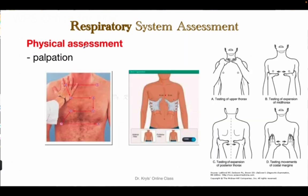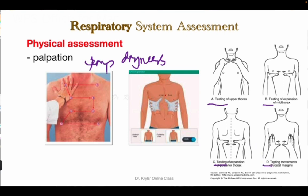Next is palpation. The nurse palpates the chest for temperature, dryness, crepitus, pain, and tactile fremitus. Also check respiratory excursion. During palpation, observe for symmetry — whether both sides of the chest are equal.